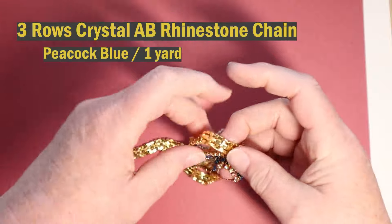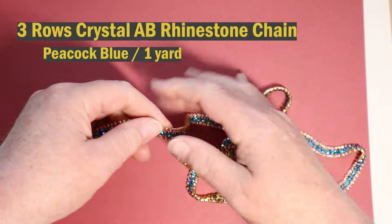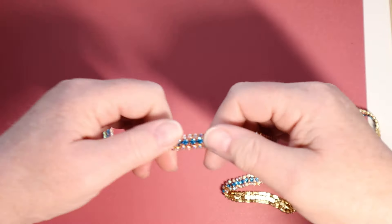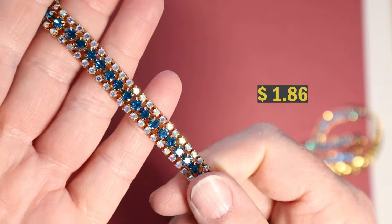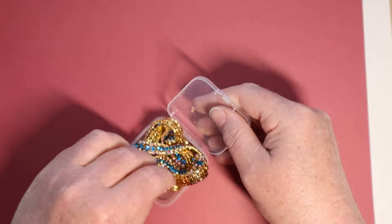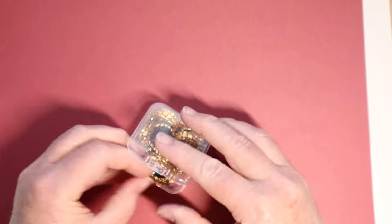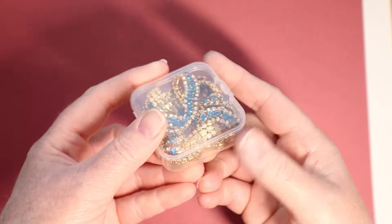All right. This is another pretty find I found here. A whole yard, peacock blue, three rolls of crystal rhinestone chain. I think this will be really pretty on some really fancy Victorian type of tags and things, junk journals. So more coming in the future for that.